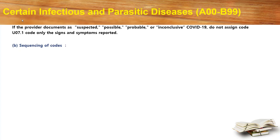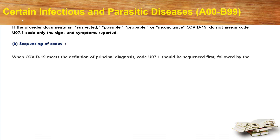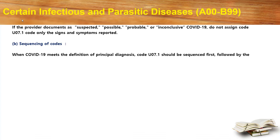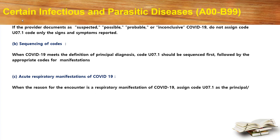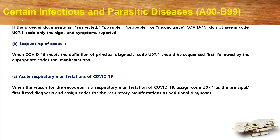Let's move into the sequencing of codes. When COVID-19 meets the definition of principal diagnosis, code U07.1 should be sequenced first, followed by the appropriate code for the manifestations. When the reason for the encounter is a respiratory manifestation of COVID-19, assign code U07.1 as the primary diagnosis and assign the code for the respiratory manifestation as an additional diagnosis.